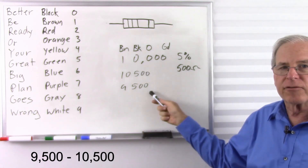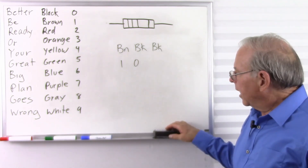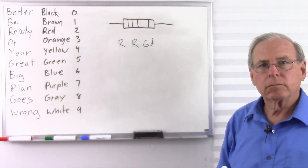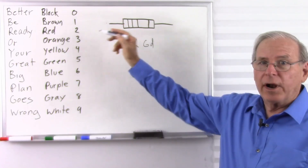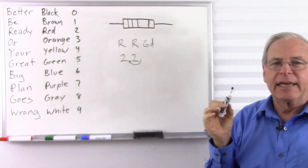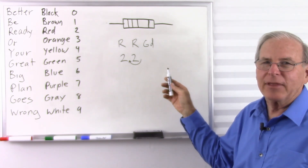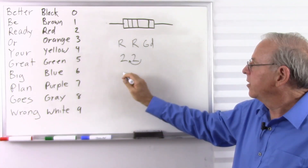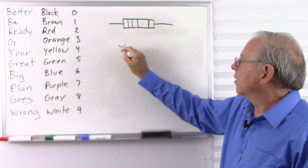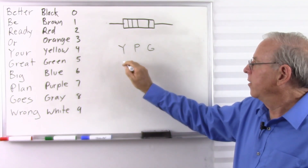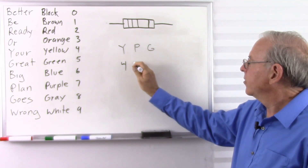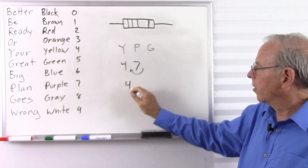This 10,000 ohm resistor may be anywhere from 9,500 to 10,500 ohms. Now, gold and silver can also appear as the third band for very small resistances. Red, red, gold: that's two and two — gold means move the decimal point one place to the left, so that's 2.2 ohms. Yellow, purple, gold: four and seven, move the decimal one place — 4.7 ohms.